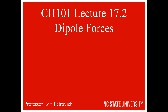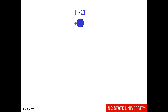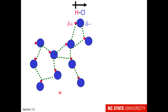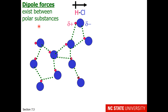The next type of intermolecular force is dipole forces. We're going to consider a polar molecule like hydrogen chloride. We know from electronegativity differences between hydrogen and chlorine that this molecule has a bond dipole — the hydrogen is partially positive and the chlorine is partially negative. So if there was another hydrogen chloride molecule in the vicinity, the positive hydrogen of one molecule would be attracted to the negative chlorine on another molecule. In fact, there's a whole three-dimensional structure of attractions between partial positive and partial negative charges. These are known as dipole forces, which exist between polar substances.